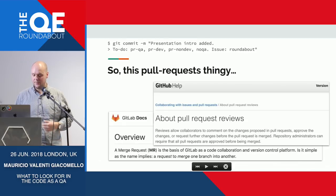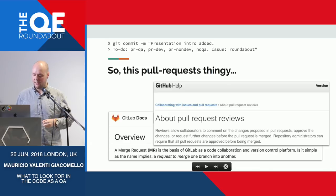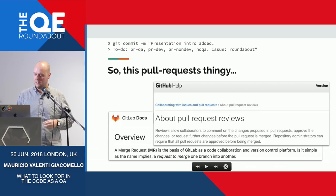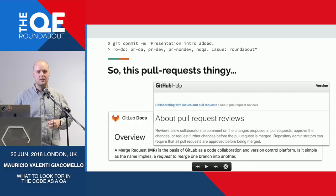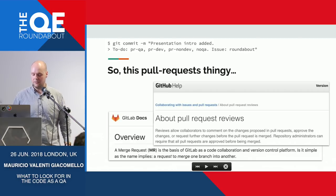From GitLab — who was bought by Apple a few days ago — a merge request, not a pull request, is the basis of GitLab as the code collaboration and version control platform. It's simple as the name implies: a request to merge one branch into another. So you're working in one branch and you want to merge all your code into another one, or main, or whatever you have.